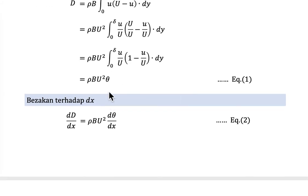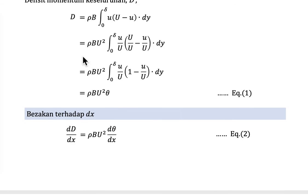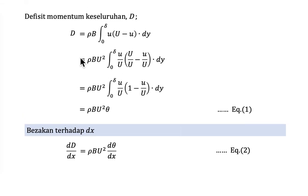So to simplify this one, we differentiate the d here with x. So we have dd over dx is equal to rho B U square d theta dx. And then we name this equation as equation 2.